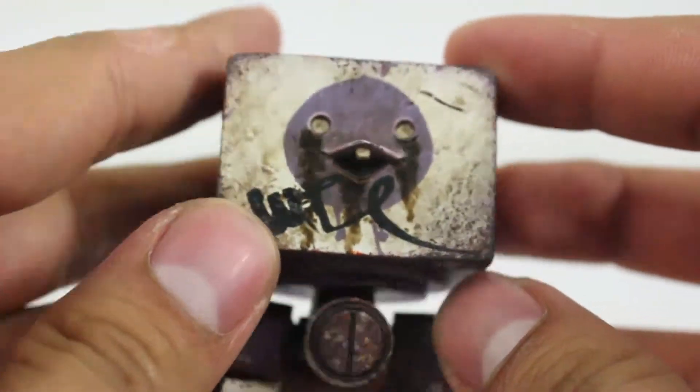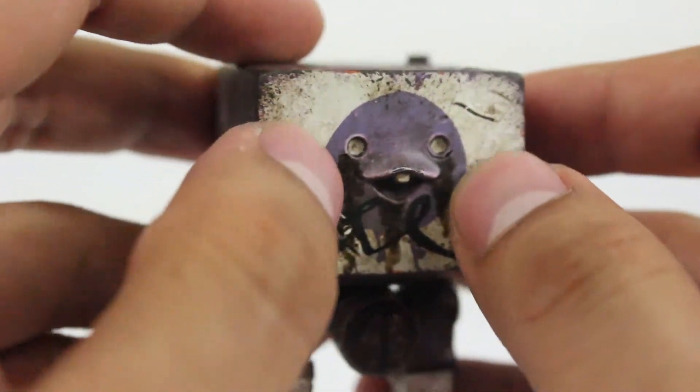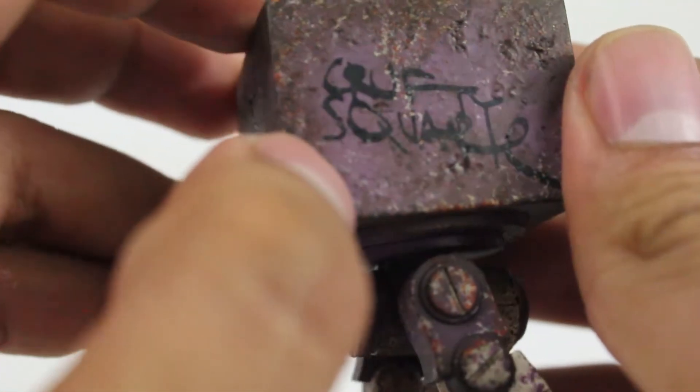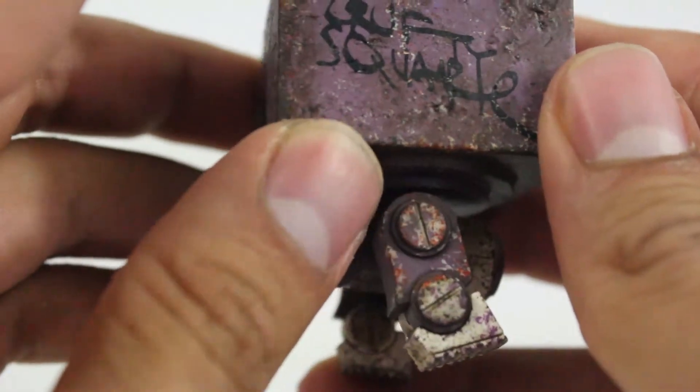Just to kind of go over a little bit of the graphics, like I said he's got this really cool kind of wonky circle on his face. And right here it says crufty, crufty square, c-r-u-f-t-y, I don't know what that means.